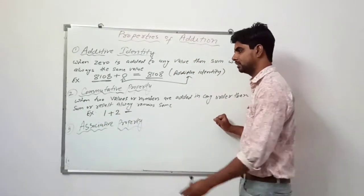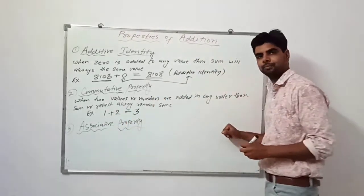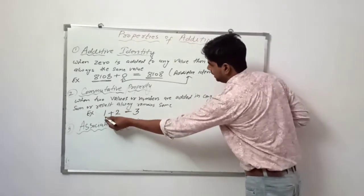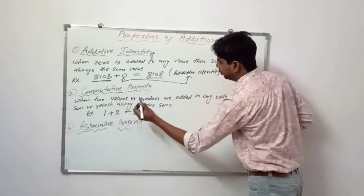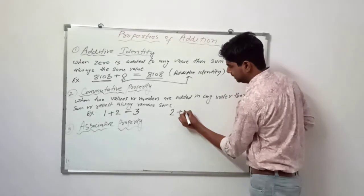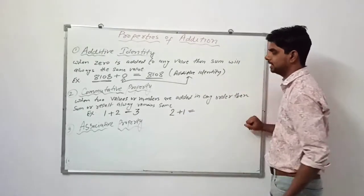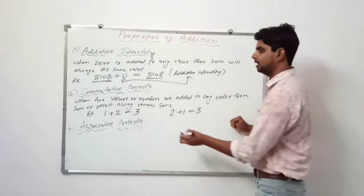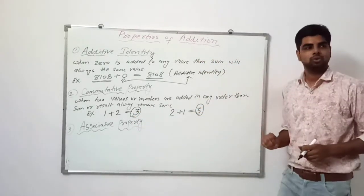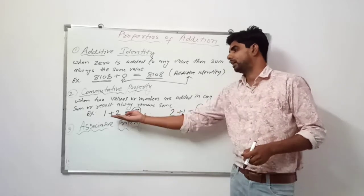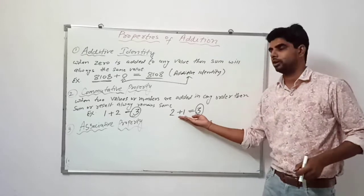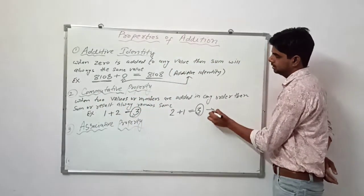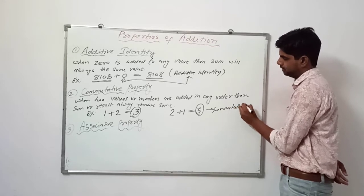For example, if we add 1 plus 2, the sum is 3. And if we are adding 1 and 2 in a different order — that is, 2 plus 1 — the result will also be 3. So even if we change the order, the result will always be the same. This is known as the Commutative Property.